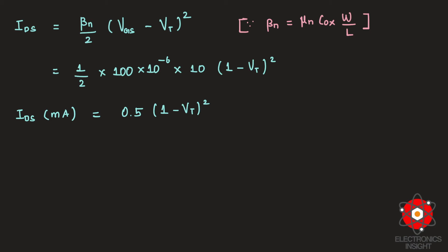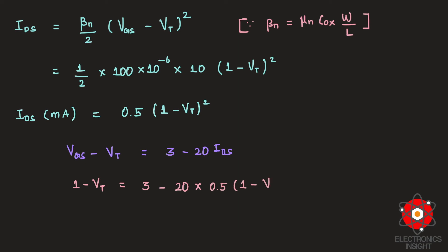Substituting VGS = 1 V into the equation VGS − VT = 3 − 20·IDS gives: 1 − VT = 3 − 20 × 0.5·(1 − VT)². Simplifying, 20 × 0.5 = 10, so the equation becomes: 1 − VT = 3 − 10·(1 − VT)².